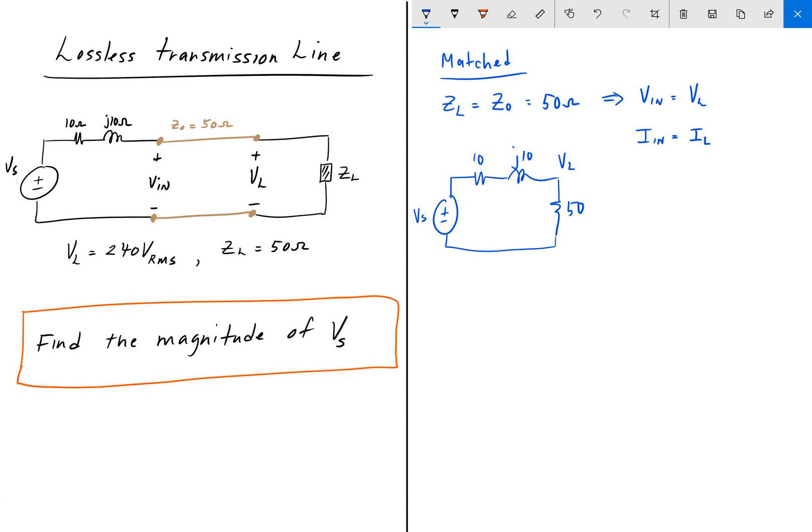We can do voltage divider on this. We know that Vl over Vs is equal to 50 over 50 plus 10 plus J10. Then we can flip this. So I'm going to flip this, go Vs over Vl because we are solving for Vs, is equal to 50 plus 10 plus J10 divided by 50.